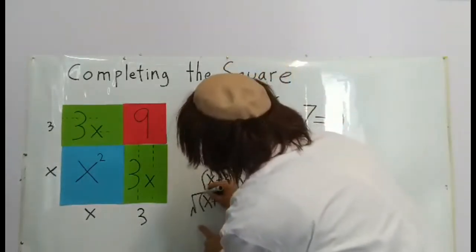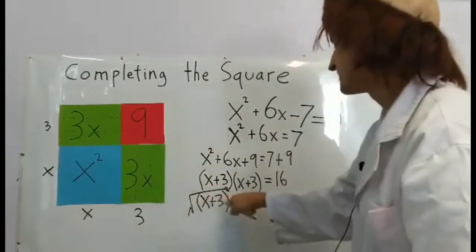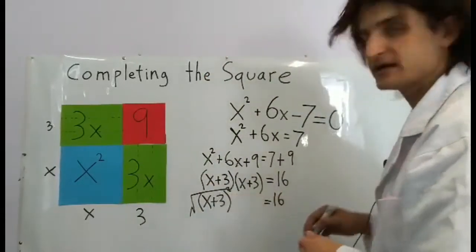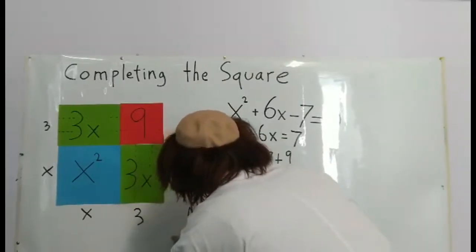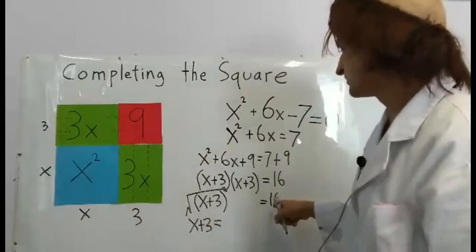The square root of 16, well there's two of them: positive 4 and negative 4. So here I'll write positive 4.